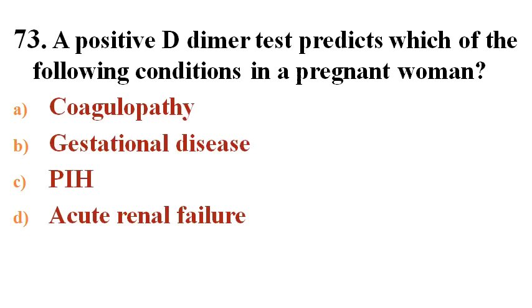Next question: A positive D-dimer test predicts which of the following conditions in a pregnant woman? Options A. Coagulopathy, B. Gestational disease, C. PIH, D. Acute renal failure.